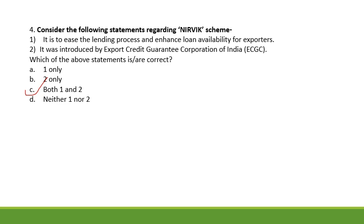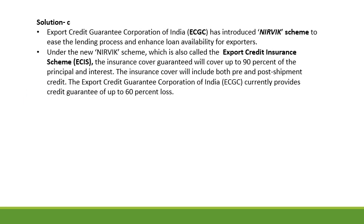The NIRVIC scheme — the Export Credit Guarantee scheme — provides insurance cover to exporters. Previously, ECGC covered the first 60% of losses. But now through the NIRVIC scheme, the insurance cover is 90% of the principal and interest.